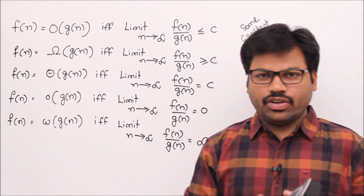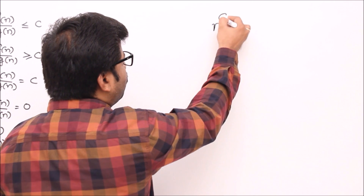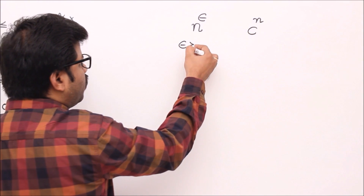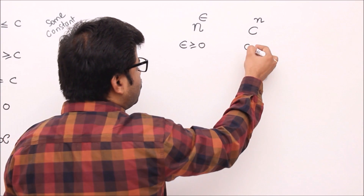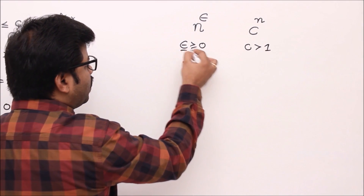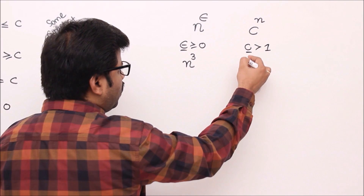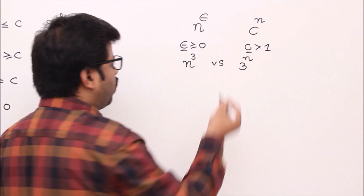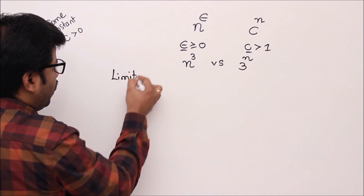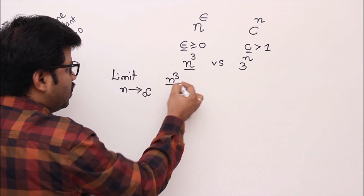Now we'll solve some problems using these formulas. Take the example of n^ε versus c^n, where ε ≥ 0 and c > 1. For instance, n³ versus 3^n — we need to compare these. According to the formulas, we apply the limit as n tends to infinity of f(n)/g(n), which here is n³ divided by 3^n.